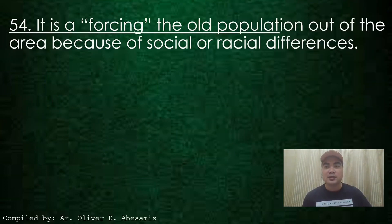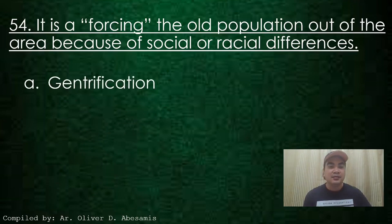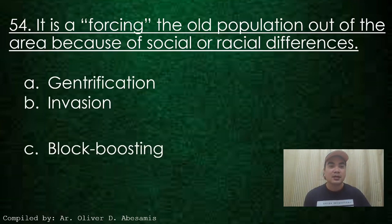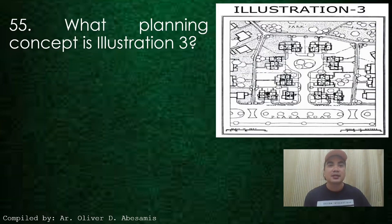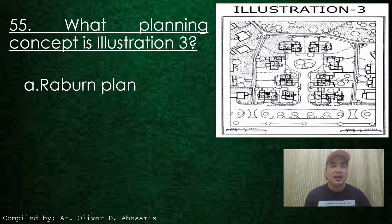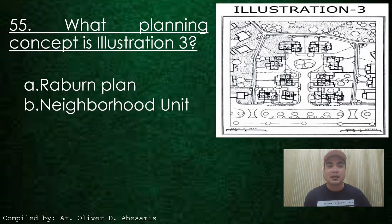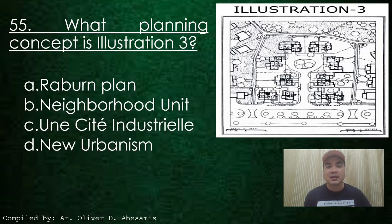Next. It is forcing the old population out of an area because of social and racial differences. What planning concept is illustrated in the image? A. Radburn Plan, B. Neighborhood Unit, C. Unite Industrielle, D. New Urbanism. Answer: A. Radburn Plan.